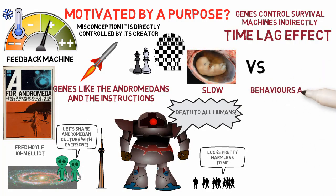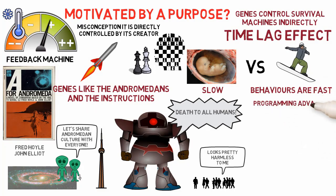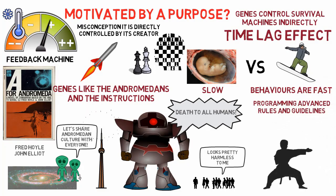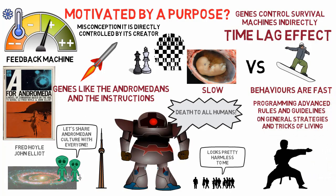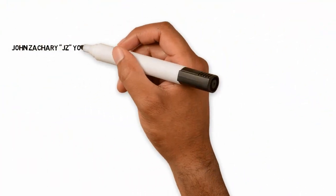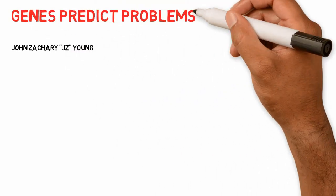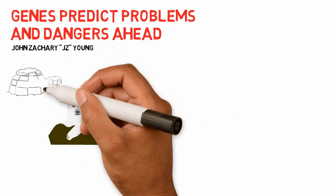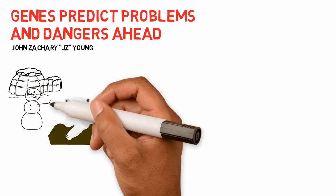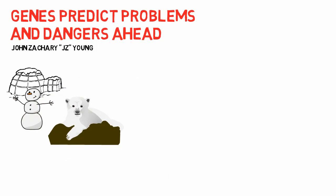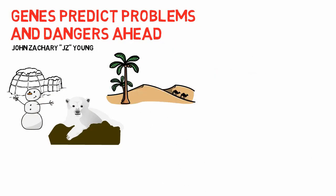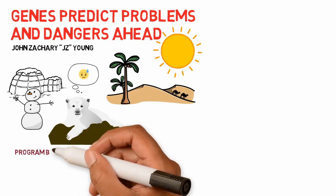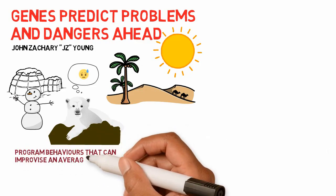Behaviors are fast, so by programming in advance with rules and guidelines, genes instruct their survival machines in general strategies and tricks of living. John Zachary Young stated that as an embryo is being built, genes must predict what problems and dangers lie ahead. If a baby polar bear is born with a thick coat in the arctic, it survives; but if arctic conditions changed to a tropical desert, the gene's prediction would be fatal. Hence, genes need to program behaviors that can improvise and achieve an average payoff.